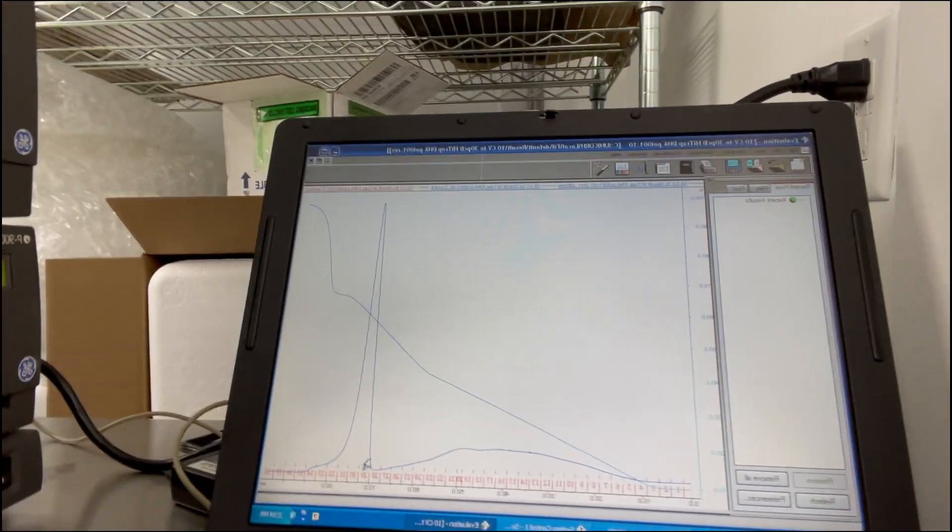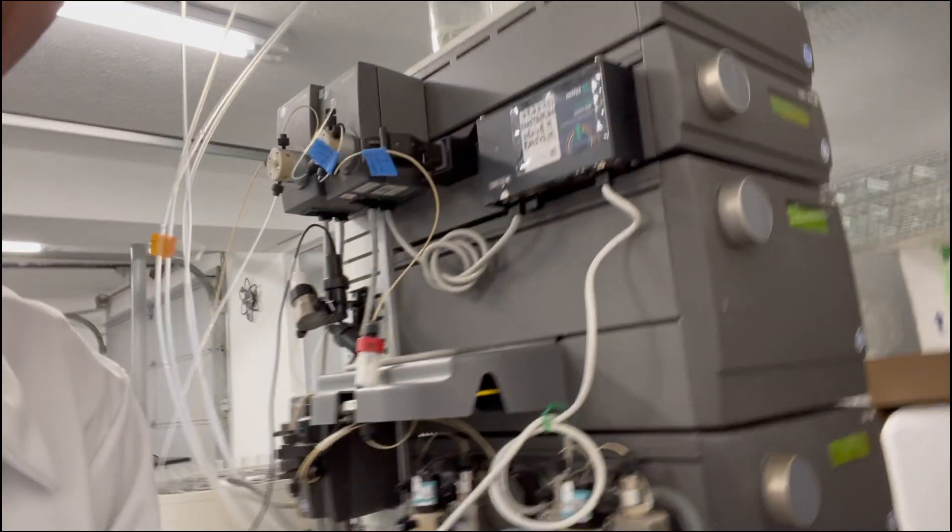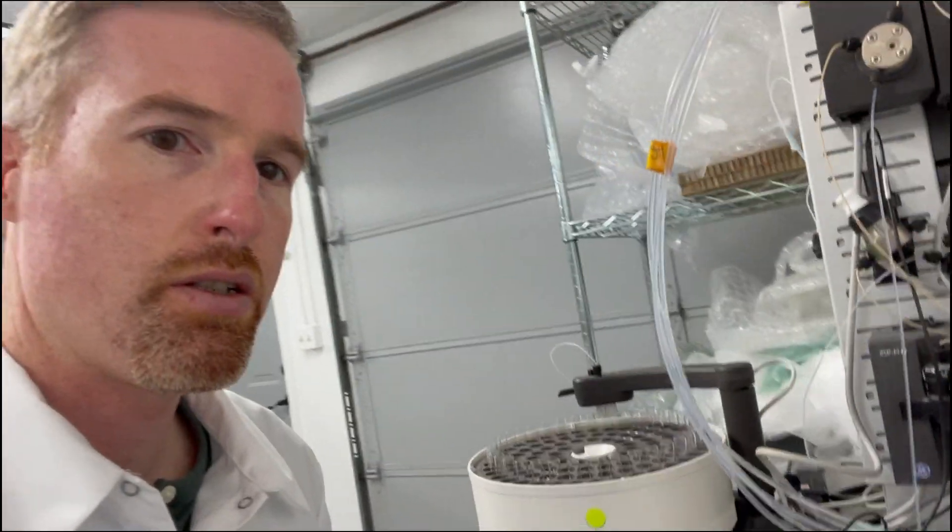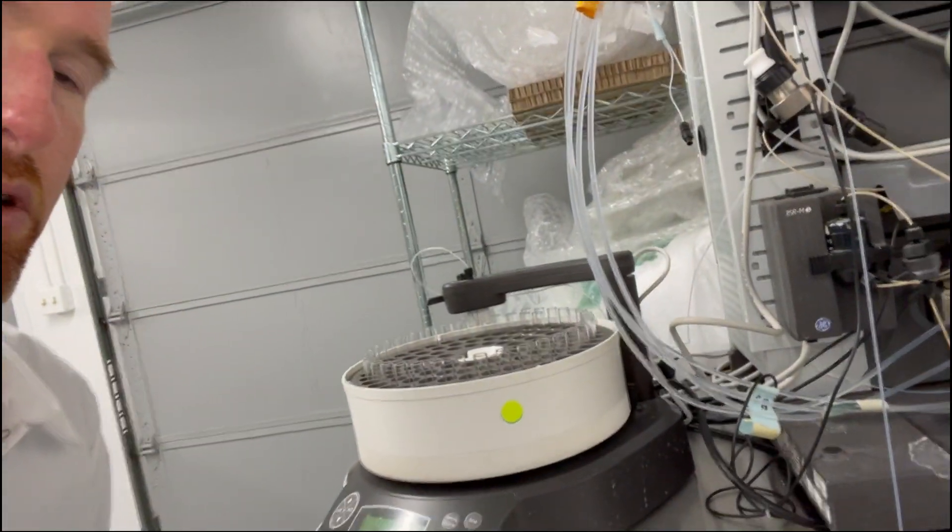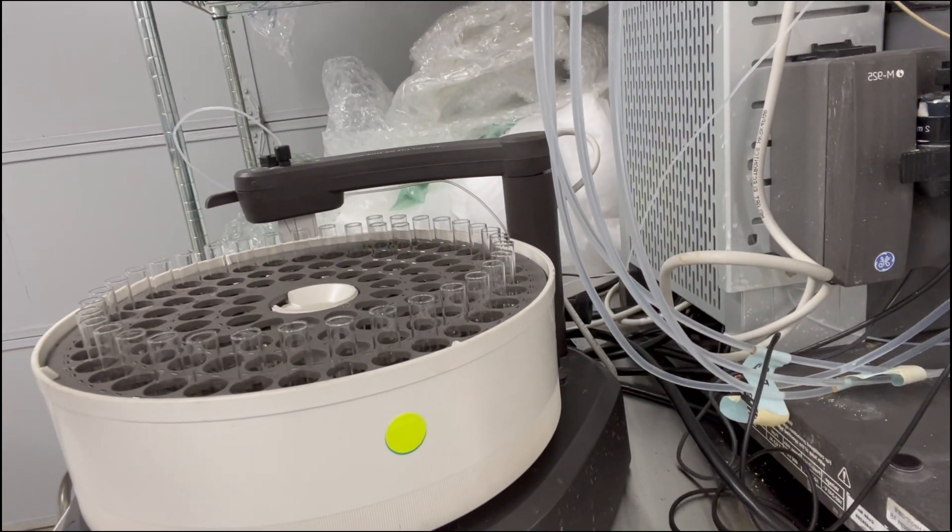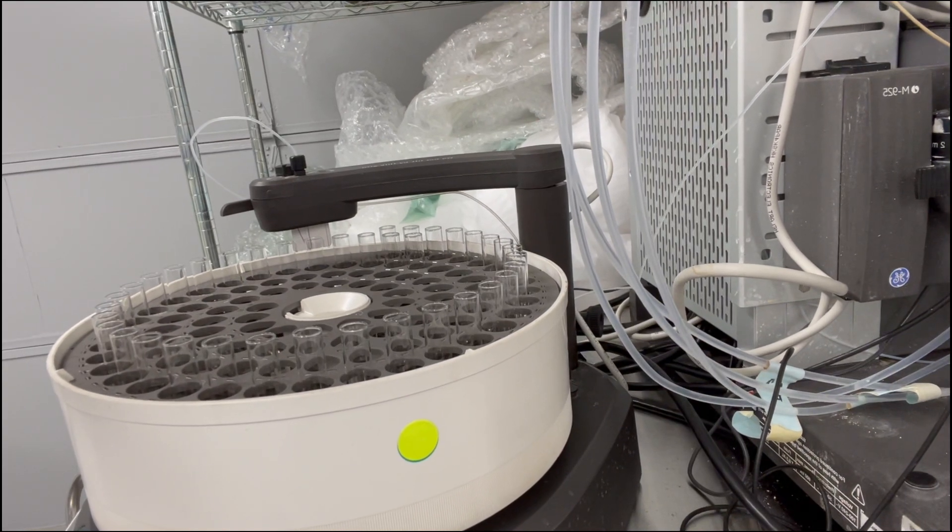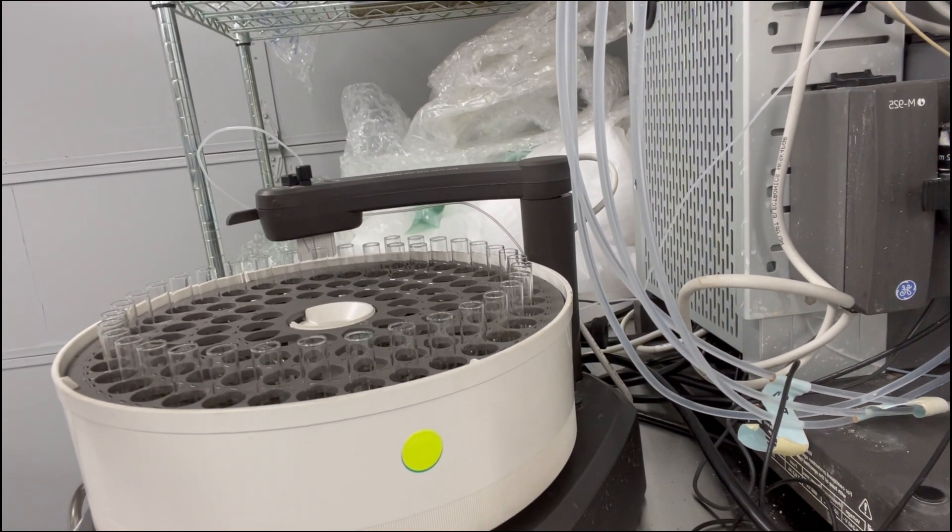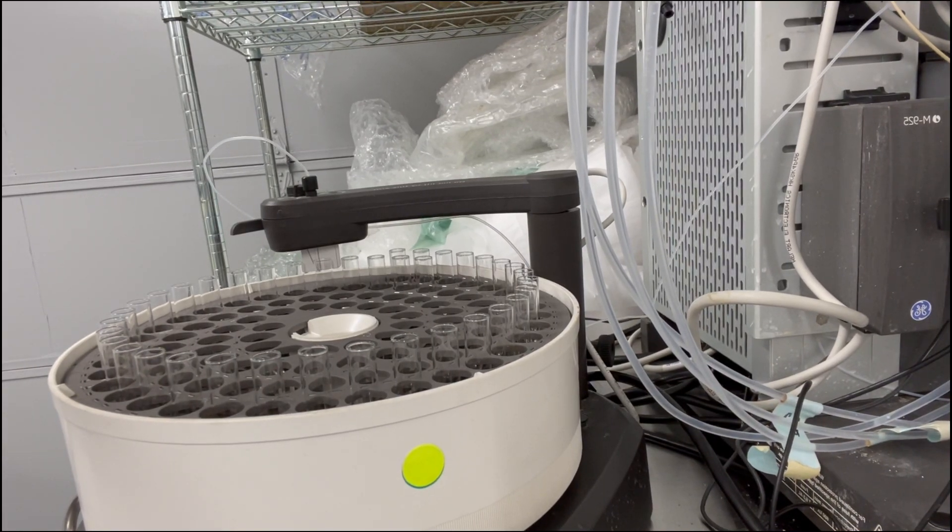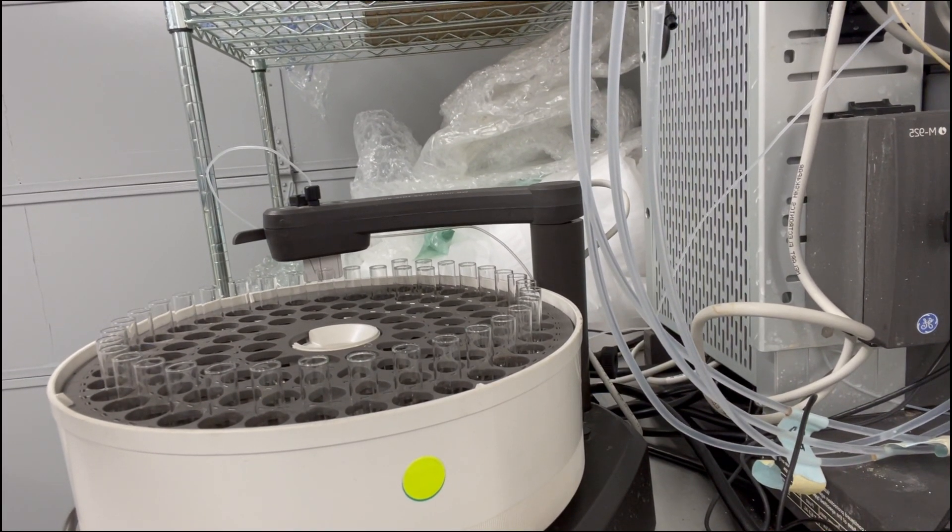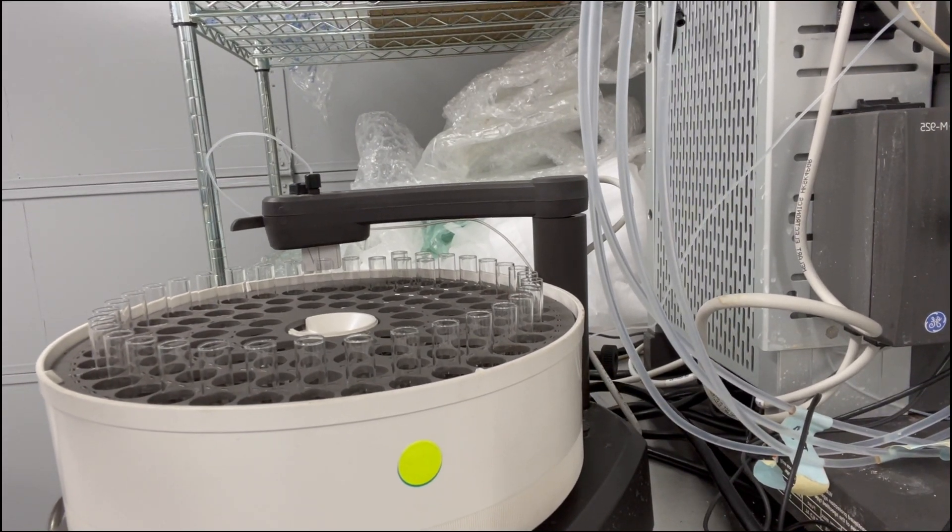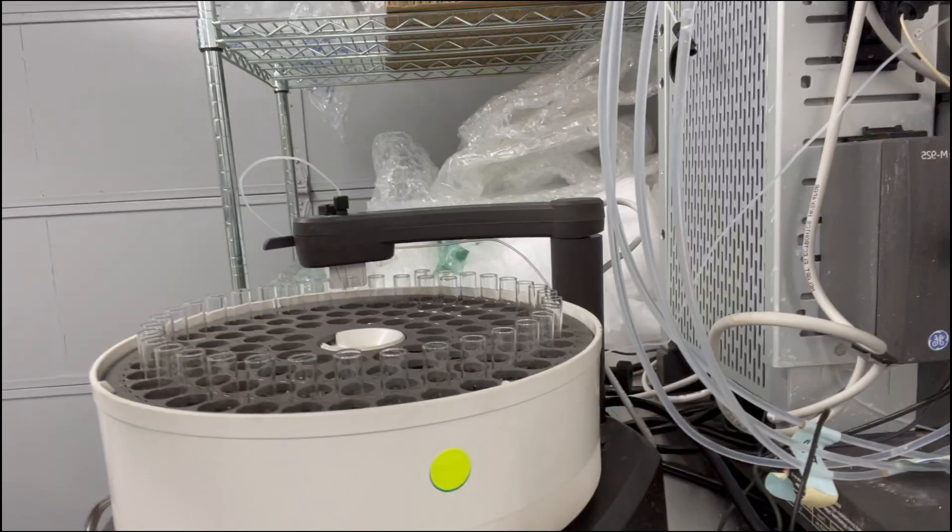So what I'm going to do next is I'm going to take all the fractions that are eluted from those peaks, find them here in the fraction collector, and run them on an SDS page gel to see which fractions have my protein of interest and have it in a pure enough form for my experiments. And then I'm going to combine those fractions for the next step.